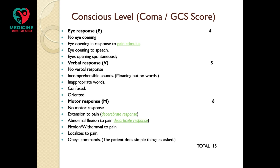The Glasgow Coma Score tests three domains: eye response, verbal response, and motor response — collectively called the EMV response. For eye response, no spontaneous eye opening is scored as one. Eye opening to painful stimulus is scored two. Eye opening to speech is scored three. Spontaneous eye opening is scored four.